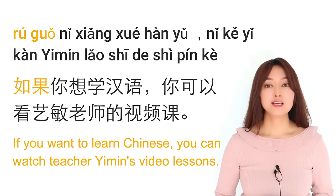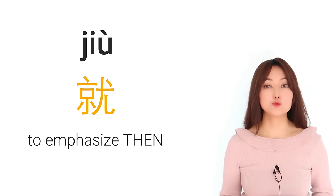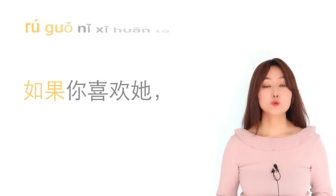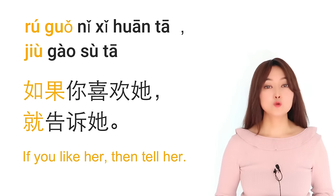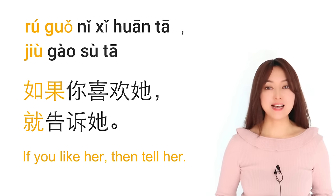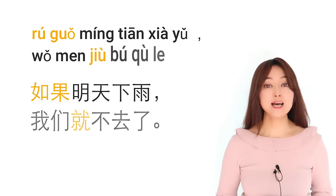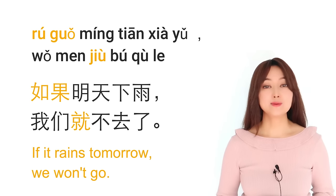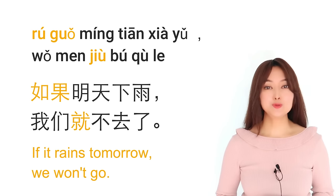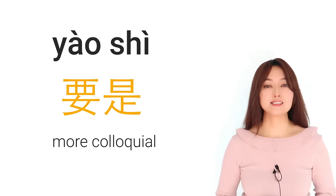It's very common to add the function word 就 when we say 如果 — it emphasizes 'if A, then B.' For example: 如果你喜欢他，就告诉他 — if you like her, just tell her. Another example: 如果明天下雨，我们就不去了 — if it rains tomorrow, we won't go.